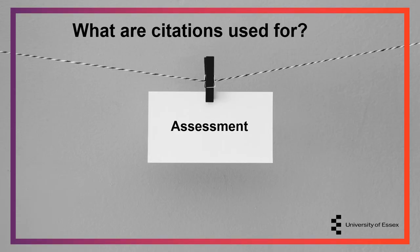So what are citations used for? One of the main uses is for research assessment, specifically in league tables. At Essex, citations per publication is a key performance indicator. Most UK institutions have a KPI based on citations, as citations are used in league tables. We also look at performance on a departmental level, but there are no set targets for this.